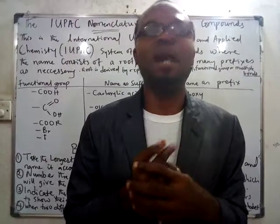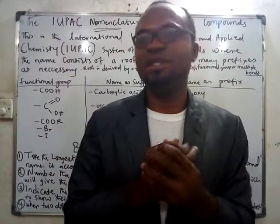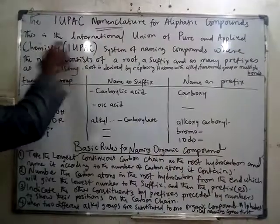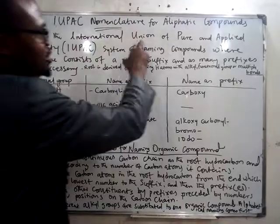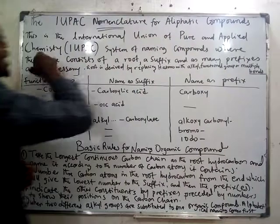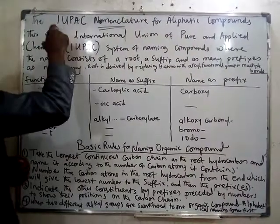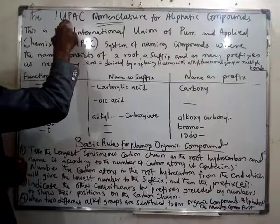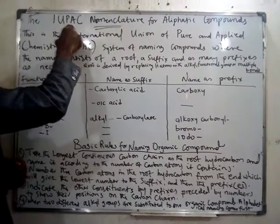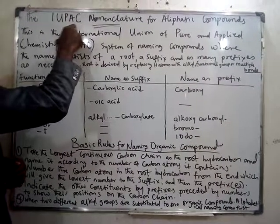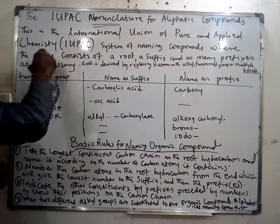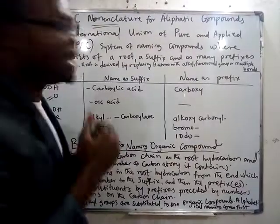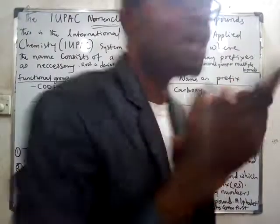What is this IUPAC system of nomenclature? This is the International Union of Pure and Applied Chemistry. I stands for International, U stands for Union, P stands for Pure, A stands for Applied, C stands for Chemistry — IUPAC. International Union of Pure and Applied Chemistry.